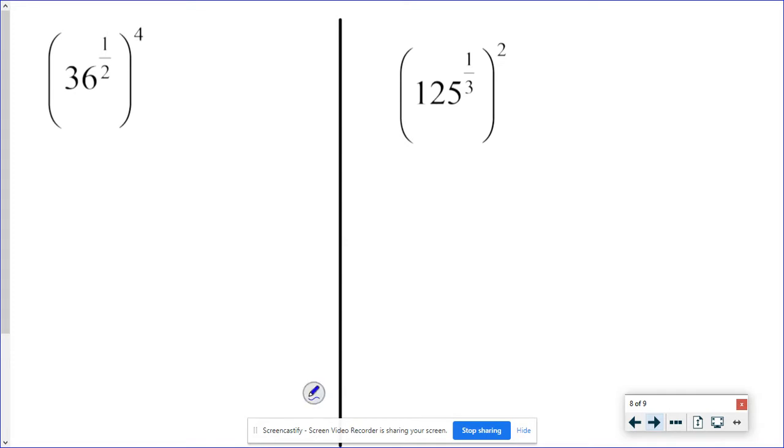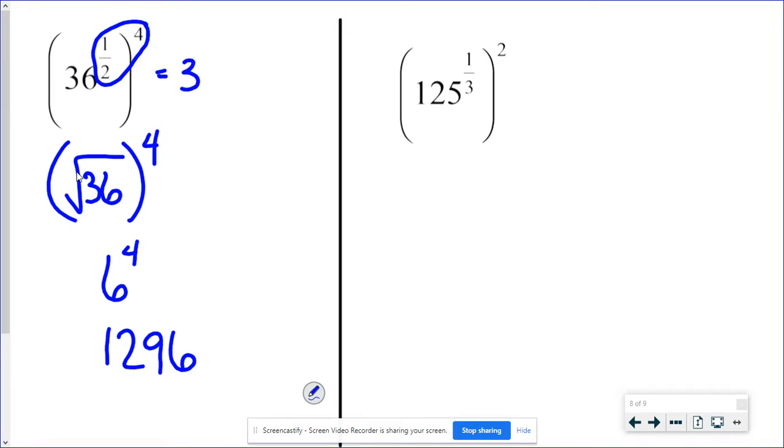On these last two problems, now we've got multiple exponents on the same number. So you can certainly use your exponent rules and multiply those powers together. Or you could also take this in the first problem, for instance, the thirty-six to the one-half power is just the square root. I wrote a cube root is just the square root of thirty-six. And the square root of thirty-six is just six. However, six to the fourth power, I don't know that one in my head. Six to the fourth power is really twelve-ninety-six. Now, if I had just multiplied these powers together, I would have thirty-six to the second power. And thirty-six squared is twelve-ninety-six. I get the same answer either way.